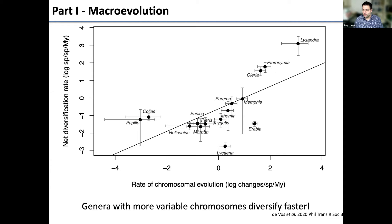So the conclusion from Part 1 is that varying chromosome numbers seem to have an impact on rates of speciation, but the underlying mechanisms — such as fusion versus fission, or anagenetic versus cladogenetic changes — differ among genera.